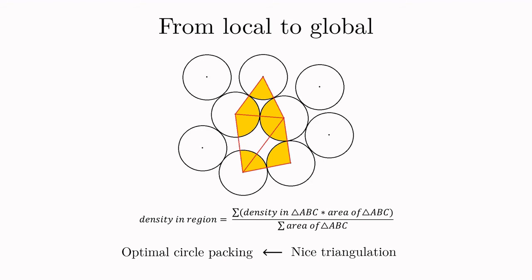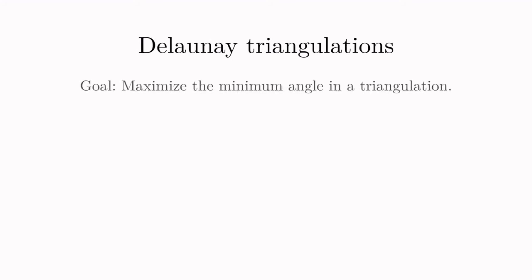Now you might object that we've just replaced one hard problem with another hard problem but the advantage is that triangulations like these have been investigated before because they are desirable for other reasons. The concept I would like to introduce now are so-called Delaunay triangulations. Their goal is to maximize the minimum angle in a triangulation. Notice that before we were actually looking for triangulations which minimize the maximum angle but since the angles in a triangle always add up to 180 degrees these two problems are clearly related and I will get back to this issue later.